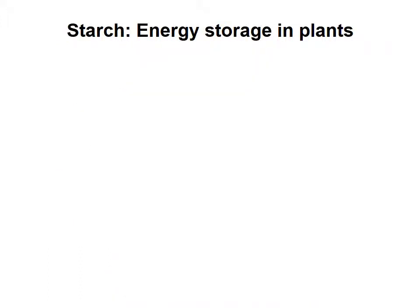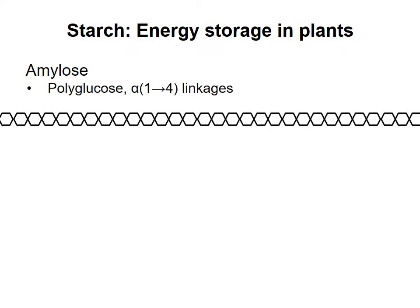Instead of glycogen, plants use starch to store glucose monosaccharides. Starch is composed of two types of polysaccharide, both of which have similarities to glycogen. Amylose, the first component, makes up about 20 to 30% of starch. It contains glucose monomers joined in alpha-1,4 linkages with very few branch points.